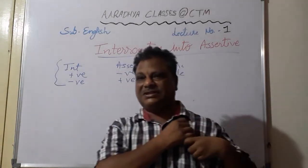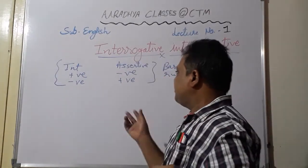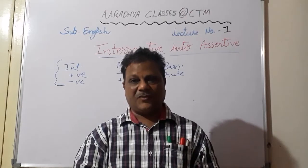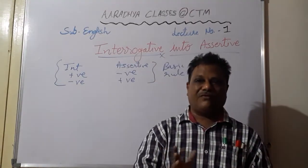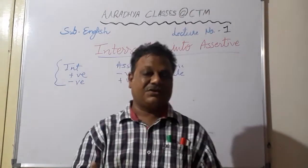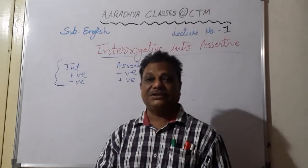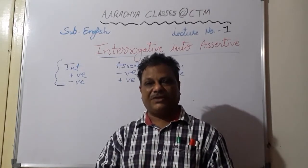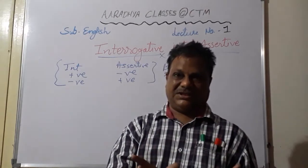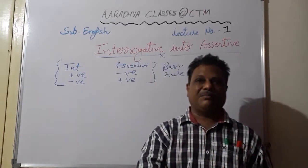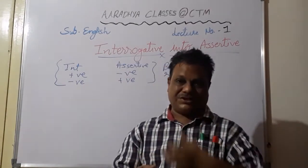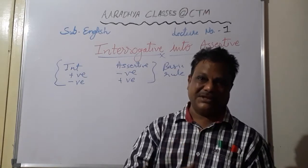Before we go further, let me make clear which are the different types of sentences. First, what is a sentence? A sentence is a group of words having a complete meaning. If a group of words does not have complete meaning, it is called jumbled words. For example, 'I to church go' — words are there but not making complete sense. But 'I go to church' makes complete sense, so that is a sentence.